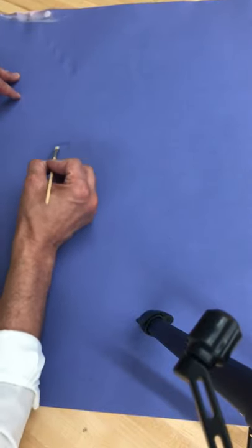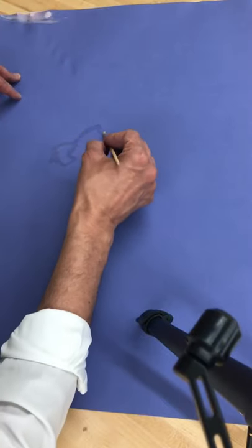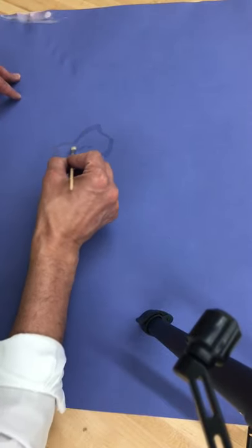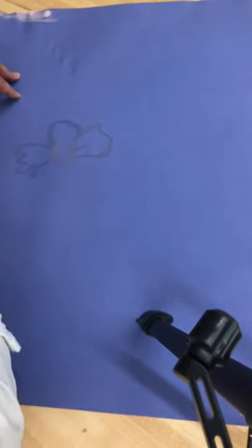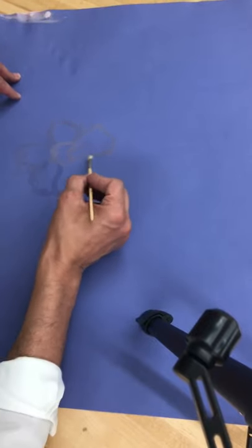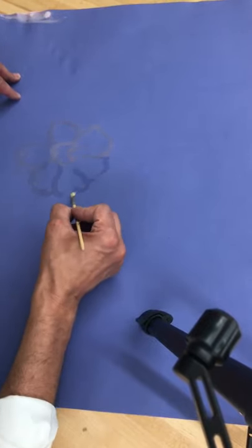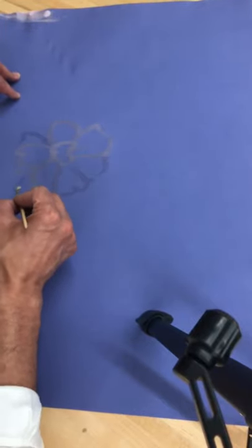All I do after that is take my brush and start to create my pattern with it, just doing a flower, and you can see as I paint with the bleach it starts to eat away at the paper.